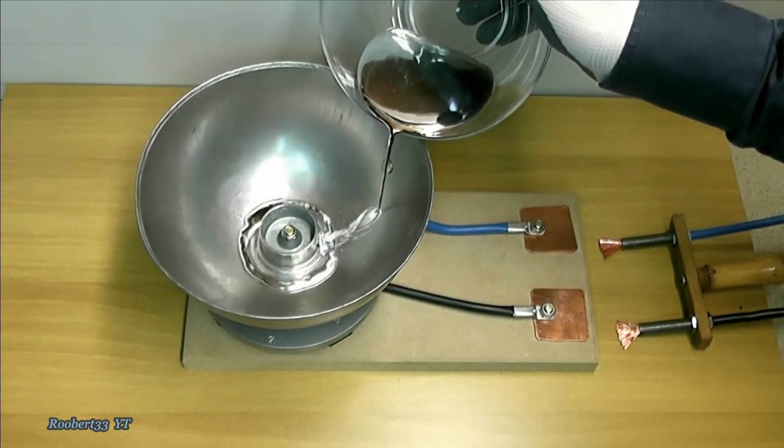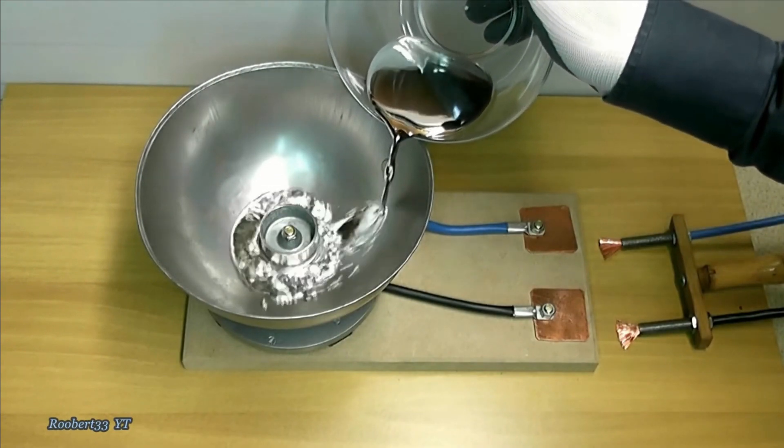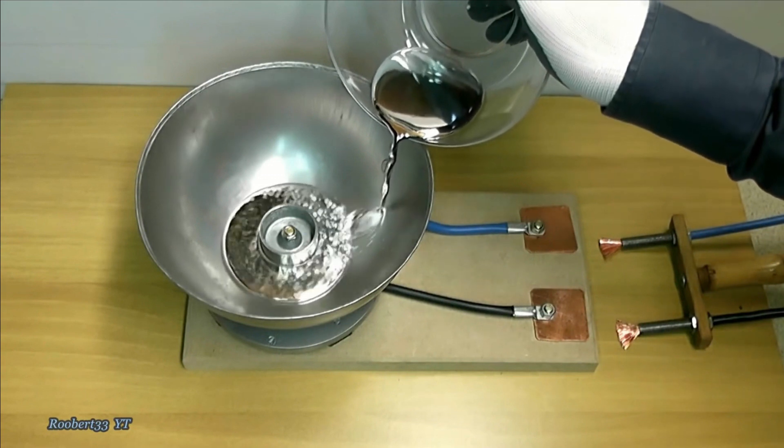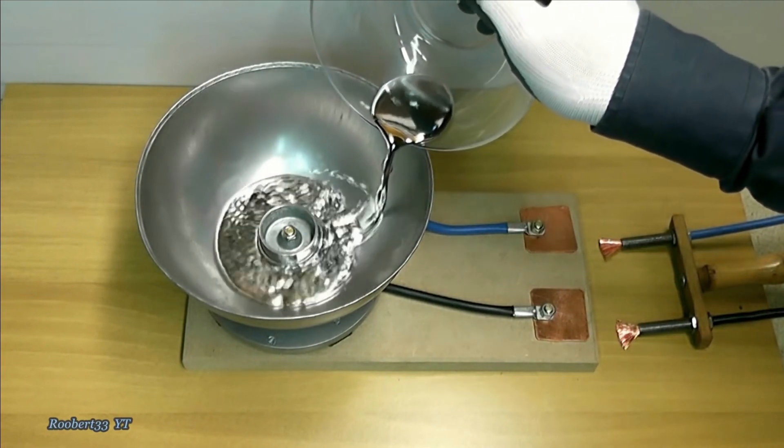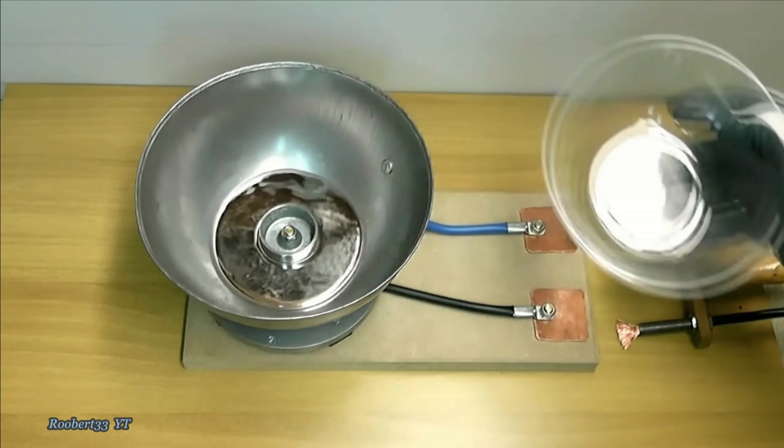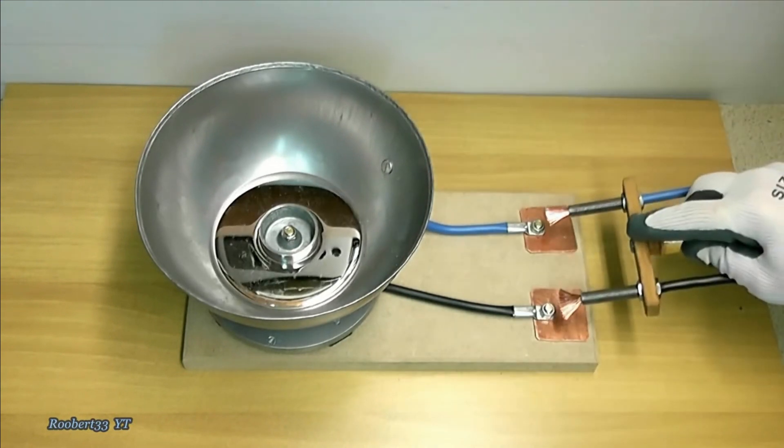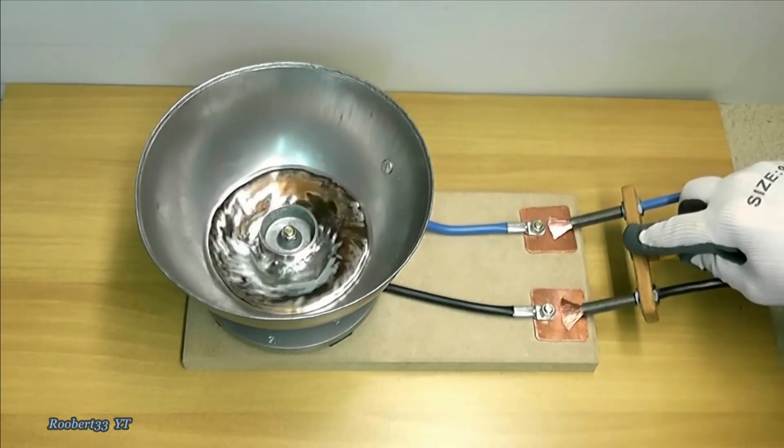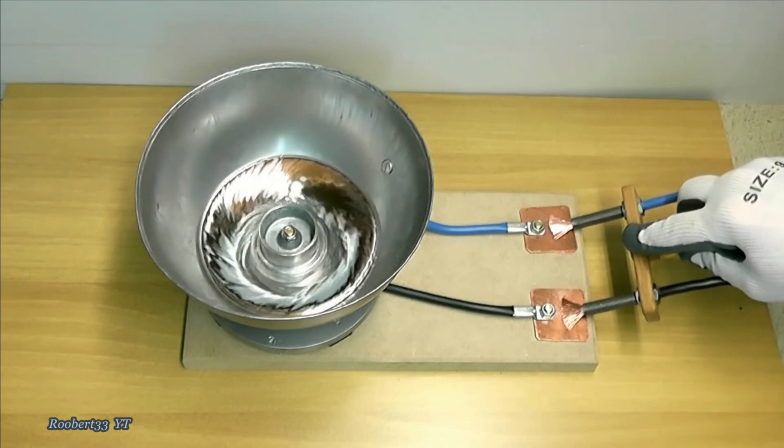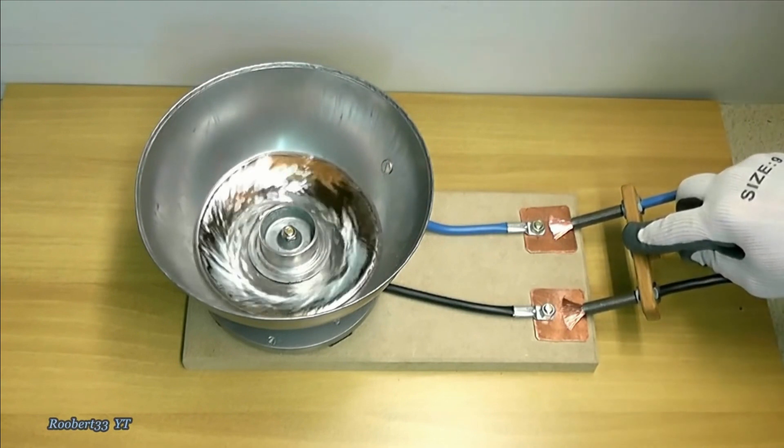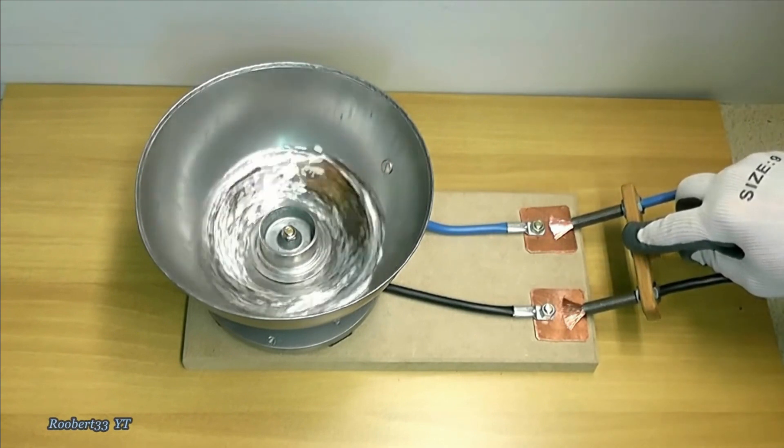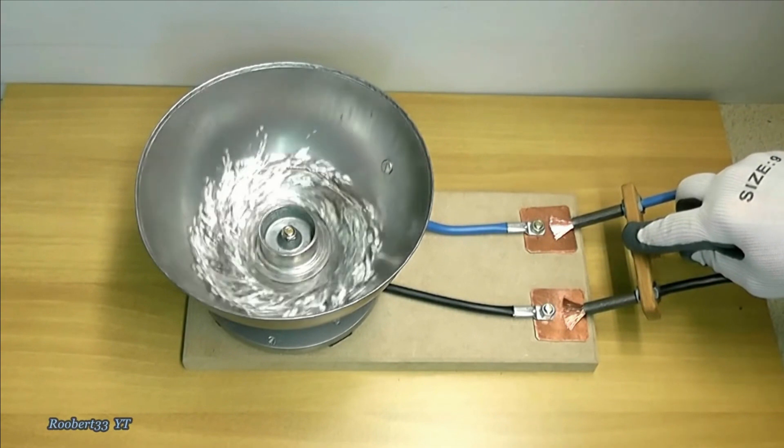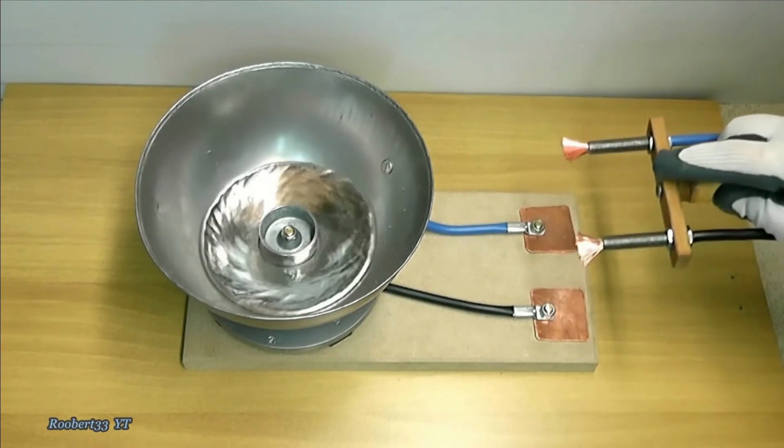One kilo of mercury is poured into the container and the circuit is introduced to a two-volt direct current. This generates a strong magnetic field that supports the system.